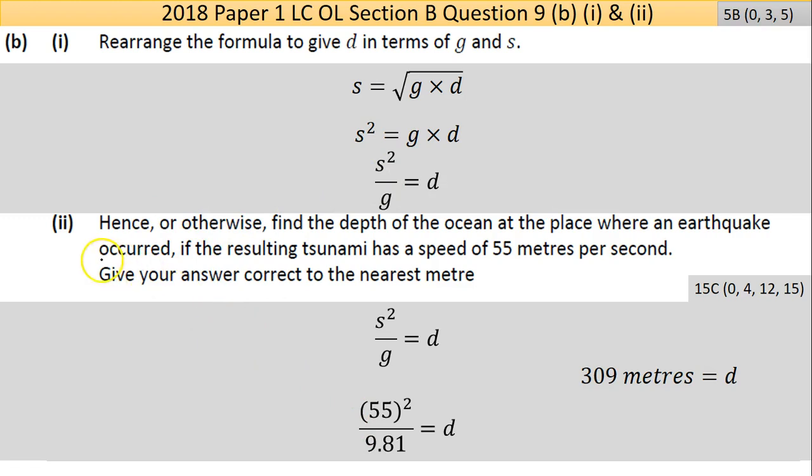Part two says hence or otherwise find the depth of the ocean at the place where an earthquake occurred if the resulting tsunami has a speed of 55 meters per second. They've helped you out. In part one, you had to rearrange the formula, and that's the formula you need to use in part two. The depth is given by the speed squared divided by gravity. You know the s is 55, you know the g is 9.8.